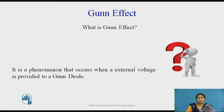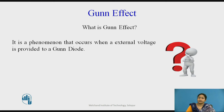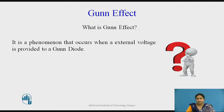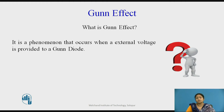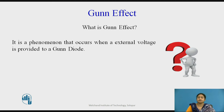What is the Gunn effect? It is a phenomenon that occurs when an external voltage is applied to the Gunn diode. When the external voltage is applied, the electrons from the lower energy band pass into the higher energy band. As the electrons have mass, they move from the lower energy band to the higher energy band. When the external applied voltage exceeds a threshold, the electrons from the higher energy band form a cluster of electrons. This cluster of electrons moves at a constant rate, and this movement creates a current in the device. This effect is called the Gunn effect.